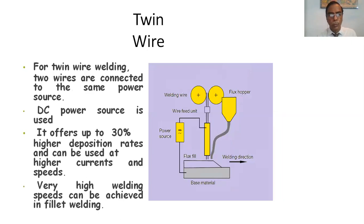Twin wire. For twin wire welding two wires are connected to the same power source. DC power source is used. It offers up to 30 percent higher deposition rates and can be used at higher currents and speeds. Very high current welding speed can be achieved in fillet welding. This is flux hopper, welding wires, wire feed unit, power source.